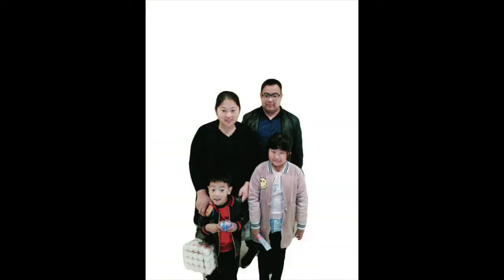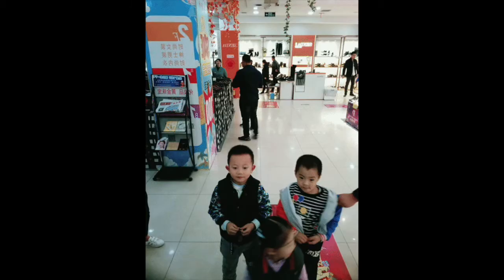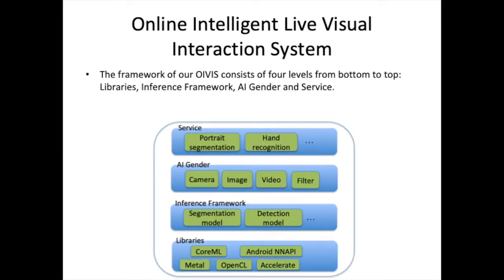This system consists of four levels from bottom to top: libraries, inference framework, AI agenda, and service.